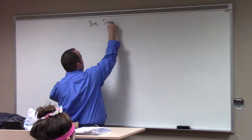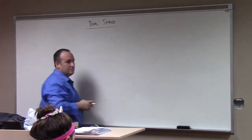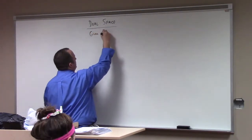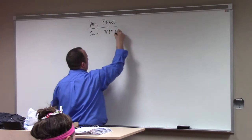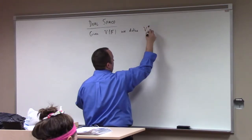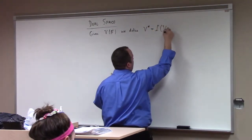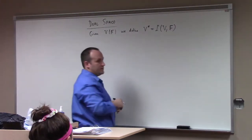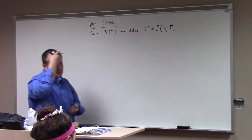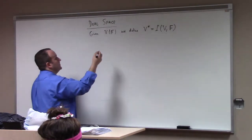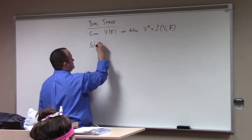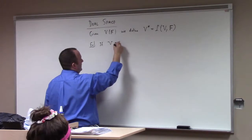I will try not to talk about this too long because it's not a super big topic. Here's what it is: given V over F, we define the dual to V, or V-star, to be linear transformations from V to F. So the dual space is the set of linear functionals from a given vector space to the field.